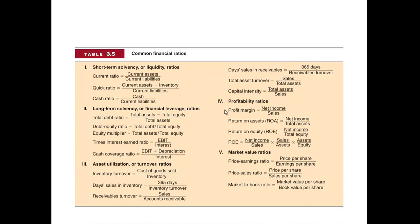The fourth category, profitability ratios, tells us how much the company is earning on its sales. Profit margin is net income divided by sales. Net income is the last line on the income statement — you take sales and subtract out all the expenses and taxes. You can sell a lot of stuff but have a very low profit margin because you're selling at a very low price or you have very high expenses.